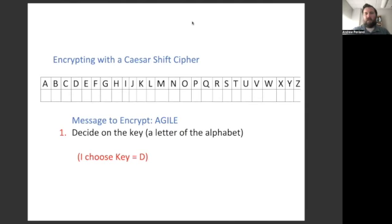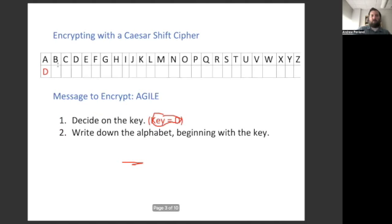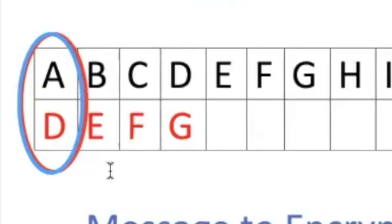I'm going to encrypt the message AGILE, and I'll choose the key D. The next step is to write the letter D below the letter A in my table. Then I'll continue writing the alphabet across.